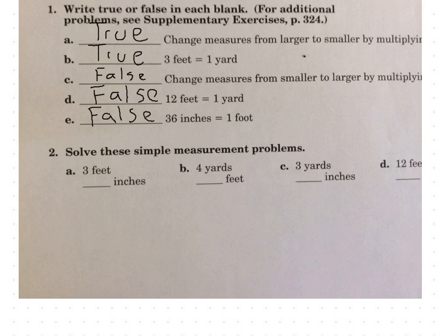Now we're getting to some problems here. It says solve these simple measurement problems. We're going three feet and figuring out how many inches there are. I want everybody to write a one, two, three. Step one, we're going from feet to inches. Are we going from larger to smaller, which would mean multiply, or smaller to larger, which would mean divide? We're going from a foot to an inch. That's larger to smaller. So that means multiply. Everybody put a time symbol for number one.